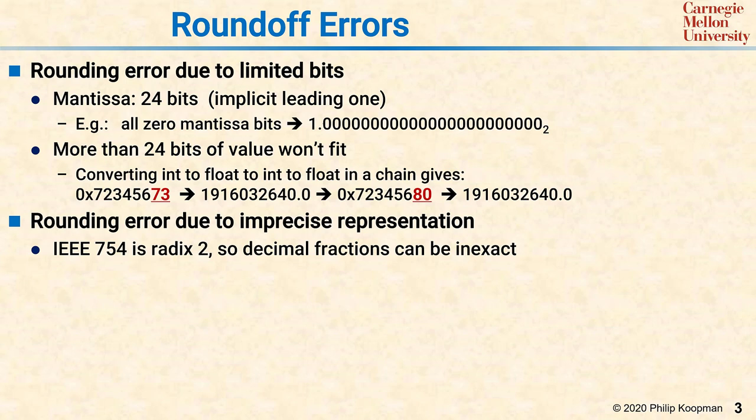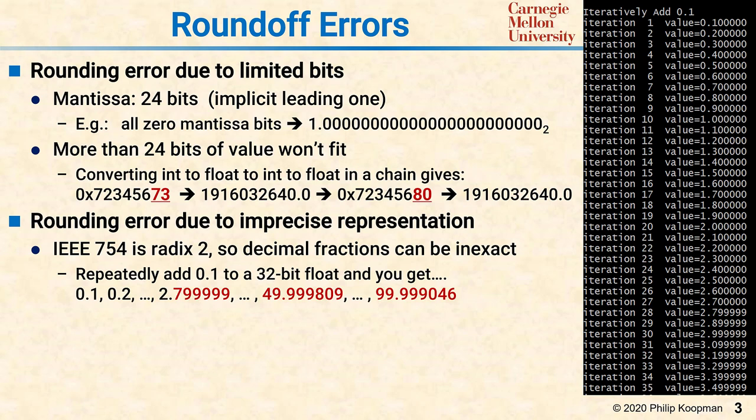Well, base 2 and base 10 result in different fraction representations that are inexact. The classic example is 0.1 in decimal is not exactly representable as a fixed number of bits in binary. It's a continuing decimal that repeats, which means if you convert 0.1 to a floating-point value, you will get an inexact number.